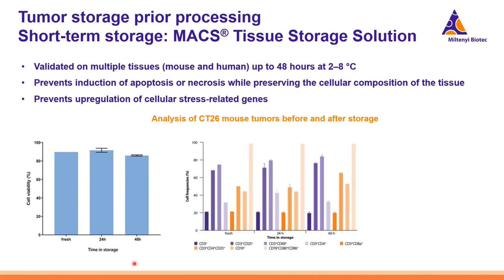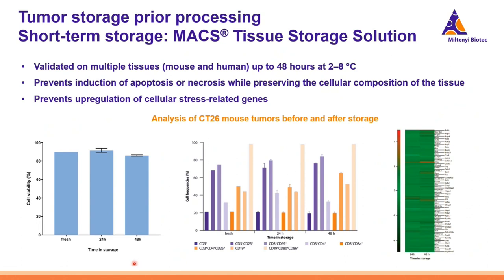The composition and the activation status of the different T cell populations analyzed within the tumor were also preserved. The solution also helped to prevent cellular stress responses in the tissues. The heat map shown here on the right side shows the fold changes in the expression levels of genes related to cellular stress pathways, representing the samples that were stored compared to the fresh samples. Hardly any changes occurred during the storage, meaning that the cells were very nicely preserved during this whole time.